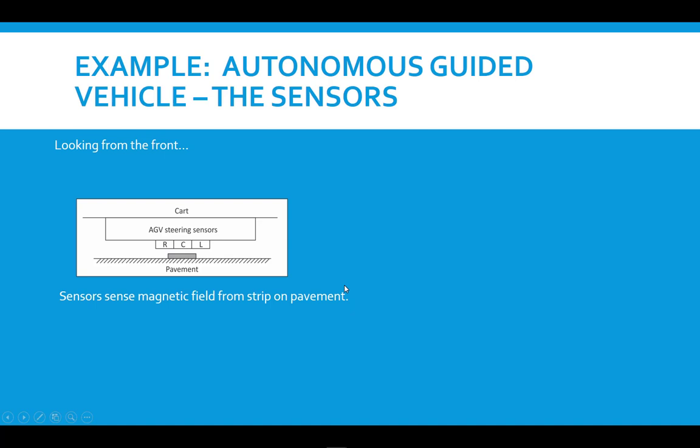This is looking at the sensor setup from the front, just to give a little bit more detail. The cart is above, and then on the pavement, we have this magnetic strip. And then we have our three sensors, as was shown on the previous diagram. The sensors sense the magnetic field. So what you're going to get from the sensors is the strength of the magnetic field. What you usually get from sensors, whether they're measuring pressure, position, or height of a tank level, is a voltage out—an electrical signal out. And that electrical signal, the voltage or current from that signal, will be determined by how high something is, how much pressure you have, or proximity in this case.